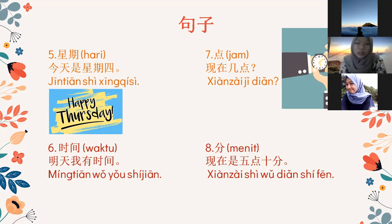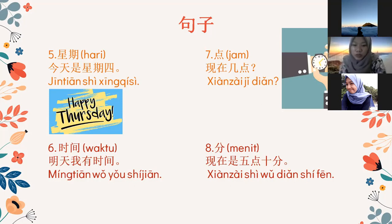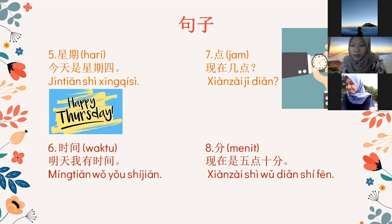Yang nomor enam, 时间 (shijian) artinya waktu. MingTian wu yao shijian — artinya besok saya punya waktu. Yang ketujuh, 点 (dian) artinya jam. Xian zai ji dian — digunakan untuk menanyakan sekarang jam berapa atau sekarang pukul berapa. Terus 分 (fen) artinya menit. Contohnya: xian zai shi wu dian shi fen. Apakah ada yang ditanyakan atau tidak paham? Sudah paham semua ya. Baik, Lausa, lanjutkan.